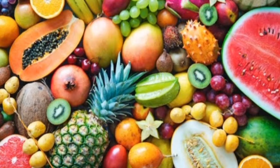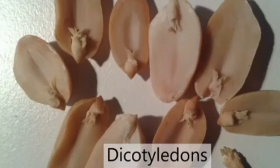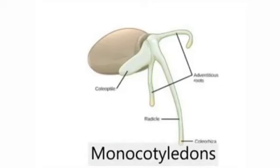Types of seeds: Dicotyledonous seeds, such as beans, are seeds that get divided into two equal parts. Monocotyledonous seeds are seeds that do not divide into two equal parts.